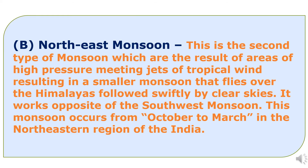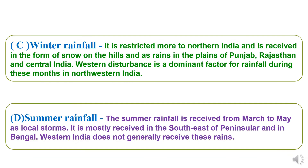The second important monsoon is the northeast monsoon, which is the result of areas of high pressure. The northeast monsoon works for the period October to March in the northeastern region of India. The third type of monsoon is winter rainfall, which is restricted more to northern India and received in various forms like snow on the hills and rains in the plains of Punjab, Rajasthan, and central India.